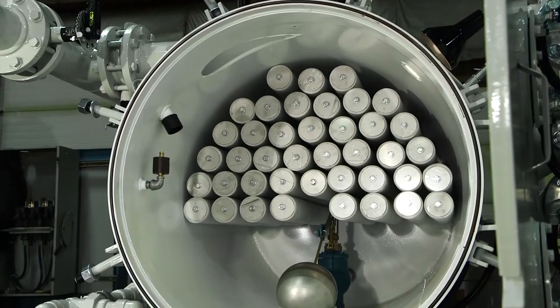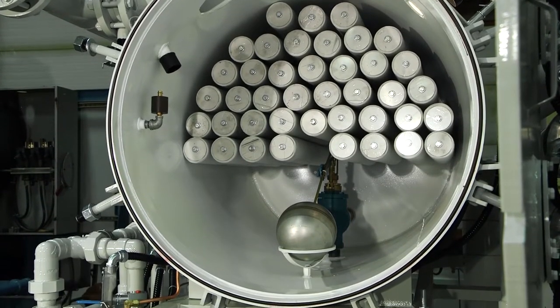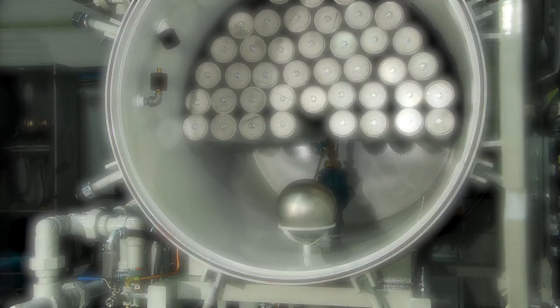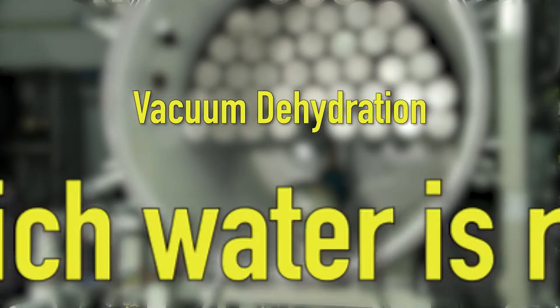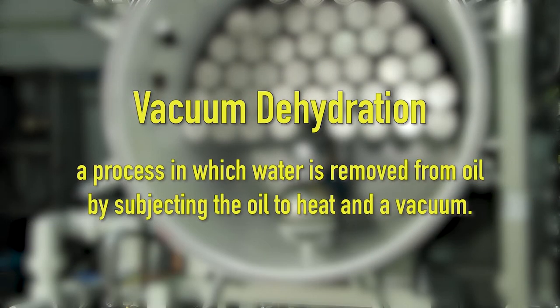We will examine a vacuum dehydrator unit that is used to recondition oil. Vacuum dehydration is a process in which water is removed from oil by subjecting the oil to heat and a vacuum.